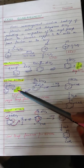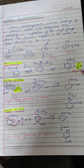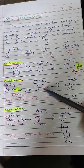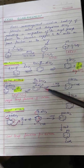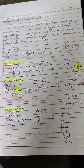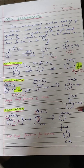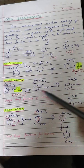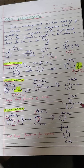In ortho attack: the acylium ion attacks at the ortho position, giving the keto form of the product, which then undergoes tautomerization to give the intermediate in enolic form. This intermediate on hydrolysis gives the product where the acyl group has shifted to the ortho position.